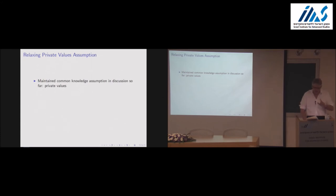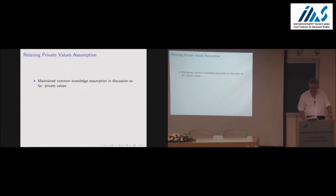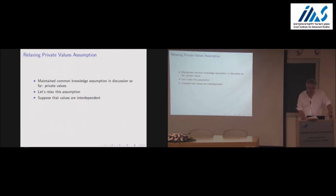Let me make one last point. I did emphasize that the private values assumption involves a loss of generality — it's a common knowledge assumption. You might want to make it. I'm fine with making common knowledge assumptions if you're sure you want to make them, but you shouldn't make them by accident without realizing what you're doing. We might sometimes want to relax the private values assumption and allow for interdependent values — where I can't predict my value without reference to Bob and his value and his higher-order beliefs.